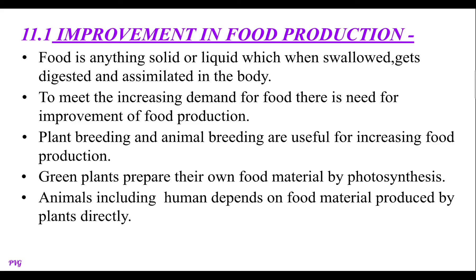Actually food is anything — it may be solid or liquid — but when it is swallowed, it gets digested and absorbed, that is assimilated in the body, and incorporated in the tissues of the body. To meet this increasing demand for food, there is need for improvement of food production. Thus plant breeding and animal breeding are useful for increasing food production.